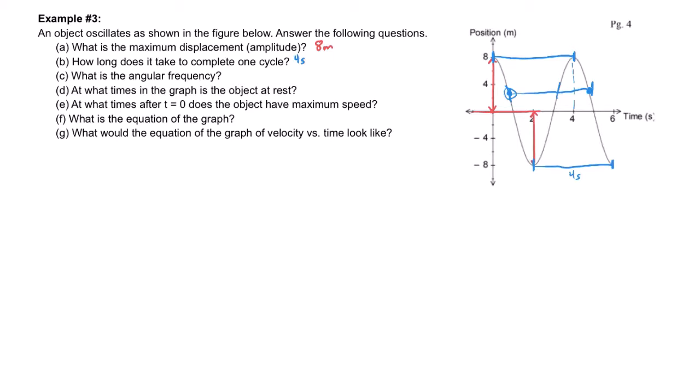The next thing that it asks is, what is the angular frequency? Well, we talked about in class that to get the angular frequency, I needed to multiply 2 times pi times the frequency. Now, we found the period in step B. That was the period up there, which was 4 seconds.